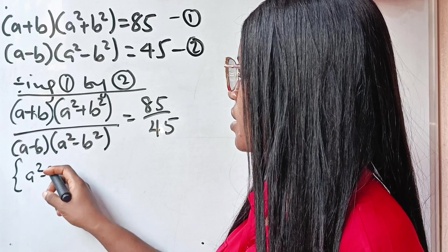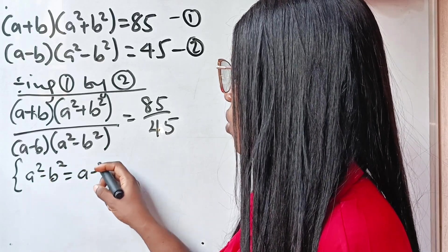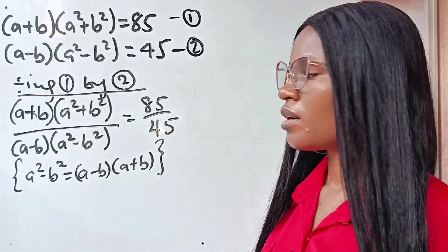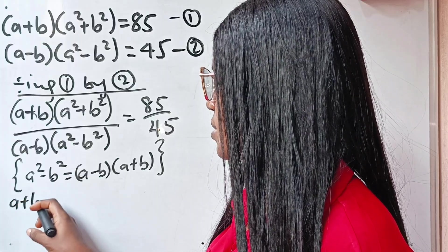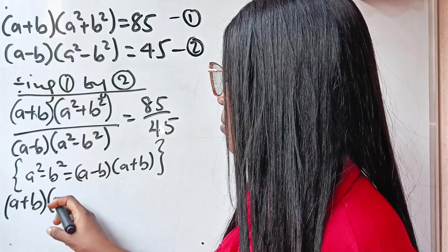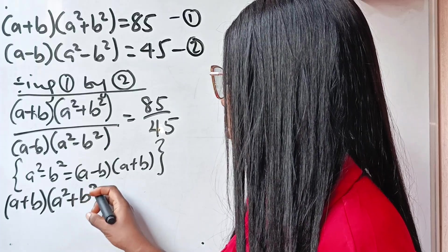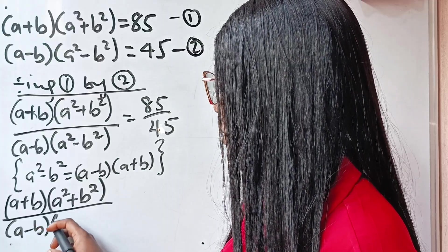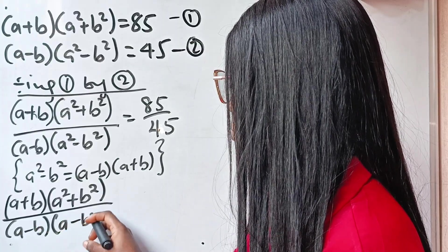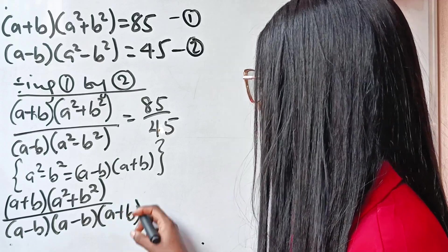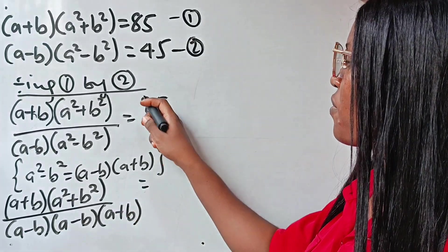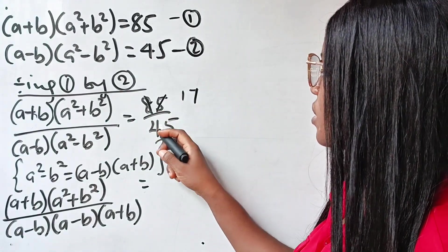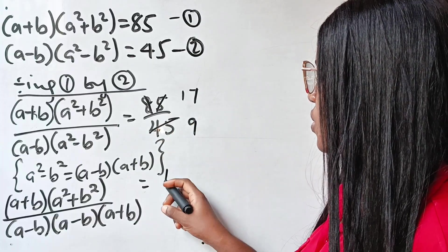Recall that a squared minus b squared is equal to a minus b multiplied by a plus b. So we are going to have a plus b multiplied by a squared plus b squared, divided by a minus b multiplied by a minus b into a plus b, is equal to — when five divides 85 we have 17, when five divides 45 we have nine.